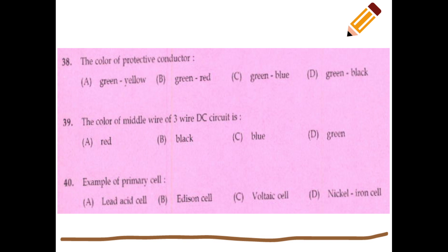The colour of a protective conductor is green-yellow. The colour of the middle wire of a three-wire DC circuit is black.